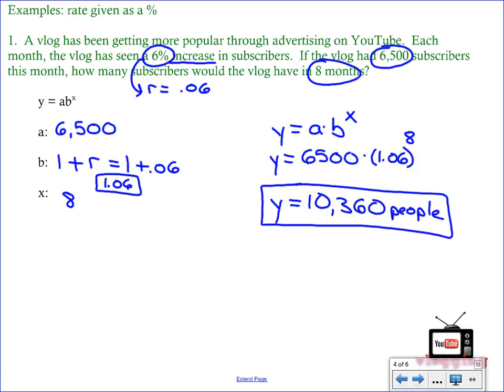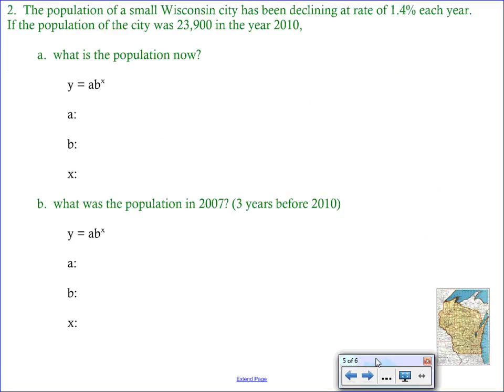Our second example looks at population, and population is a very common quantity that grows exponentially. So let's go ahead and read through it. It says the population of a small Wisconsin city has been declining. Underline that word declining, that means we are looking at decay. It gives us the rate of 1.4%. So let's go ahead, let's take a pause here and let's calculate our r value. We need to move that decimal place over, so we are looking at an r value of 0.014.